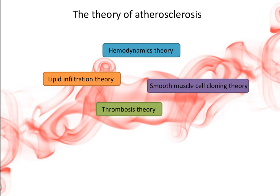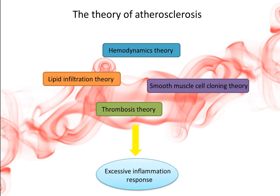In 1976, Ross proposed the theory of endothelial injury response. It is believed that atherosclerotic lesions are the result of excessive inflammation response of arteries to various factors causing endothelial and vascular wall-smooth muscle injury. The process has a large number of growth factors, inflammatory factors, and vascular regulatory molecules involved.